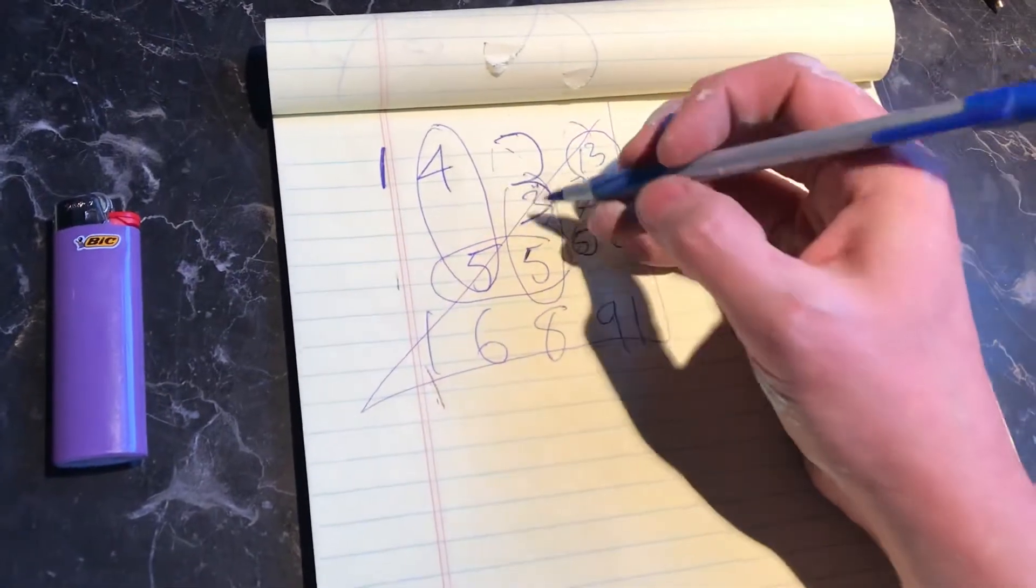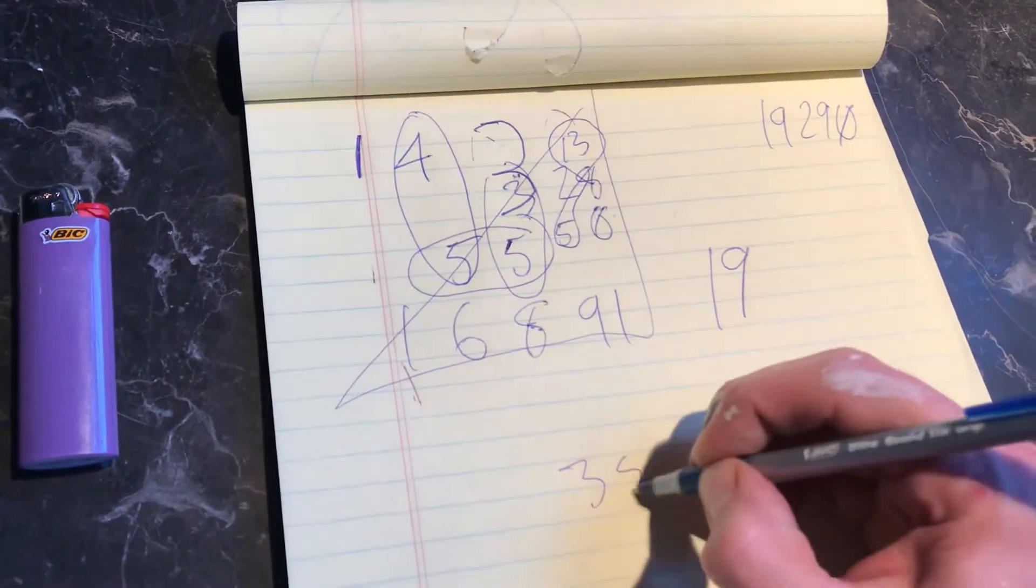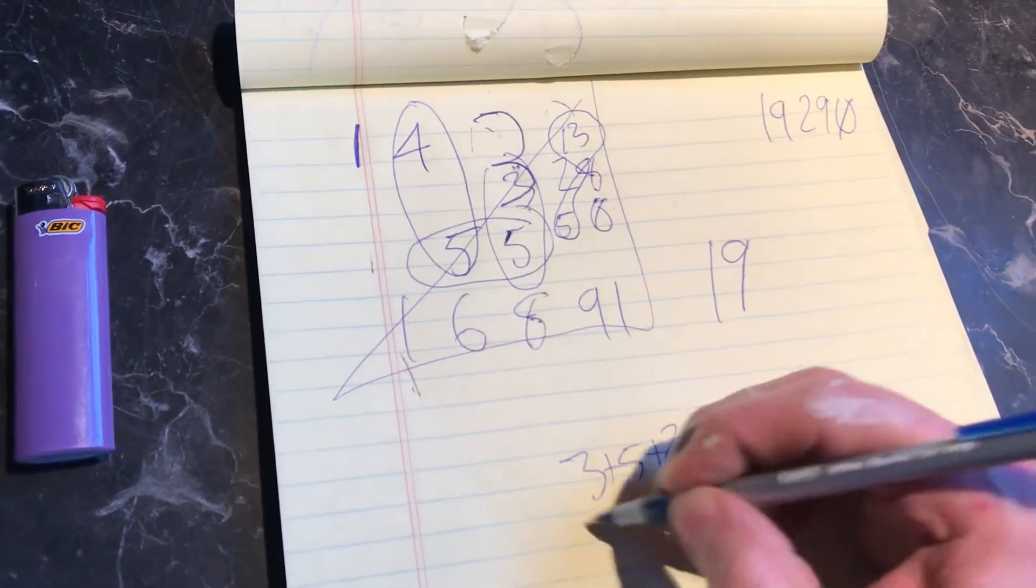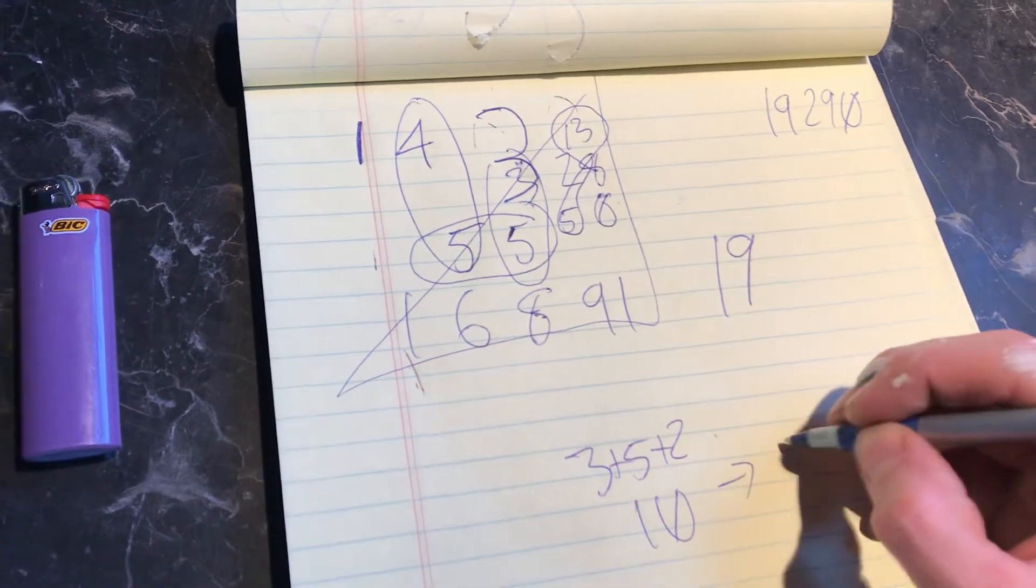So if this eight is a two, you have three, five, and two. If you add them together it comes to 10. And if one's a zero, that could be a two.